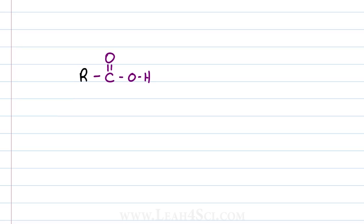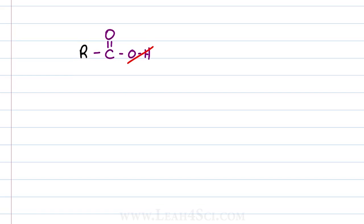If we remove that OH and replace it with different groups, we get a derivative of carboxylic acid because we're deriving it from the carboxylic acid molecule, and this leads to a whole new set of reactions that you can use in synthesis.